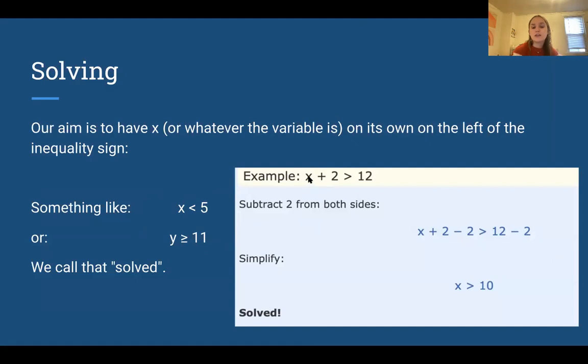So here we have the example of x plus 2 is greater than 12. So you would subtract 2 from both sides to get x by itself. And when you do that, you have 2 minus 2, which is 0, and you have 12 minus 2, which is 10. So you get x is greater than 10. And any number greater than 10 would solve this inequality.